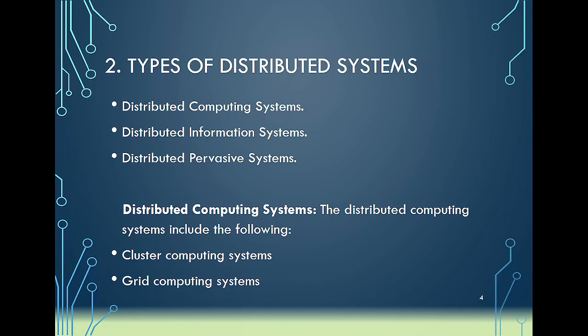One common type of distributed system is computing systems. This includes cluster computing systems, which are homogeneous computing systems that rely on the same hardware and software in operation. We also have grid computing systems, where different computers rely on different sets of hardware and software in a networked environment.